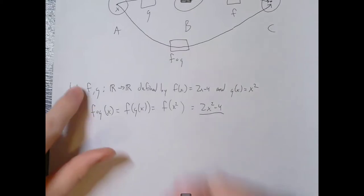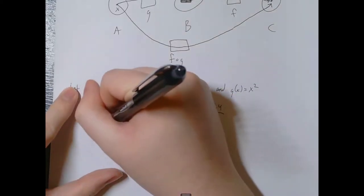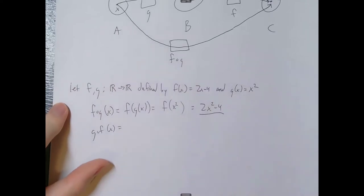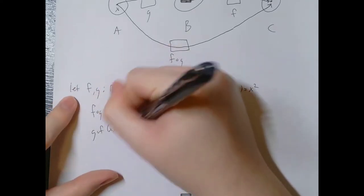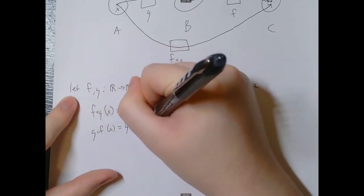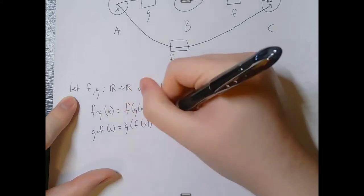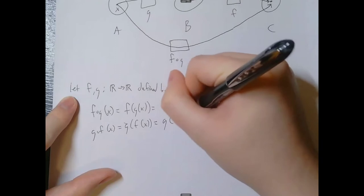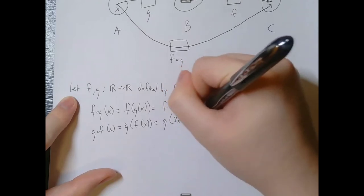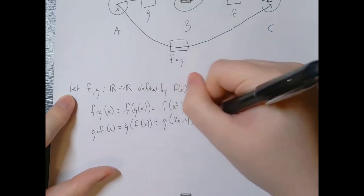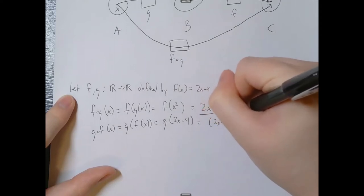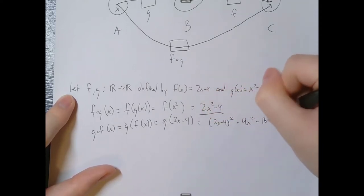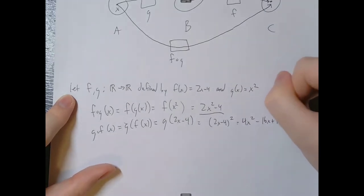Similarly, g∘f of x equals g(f(x)) = g(2x − 4) = (2x − 4)² = 4x² − 16x + 16.